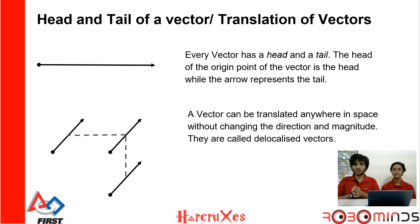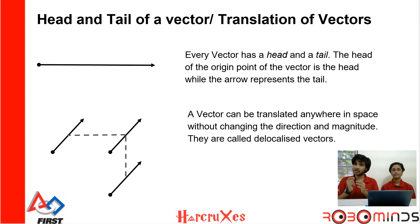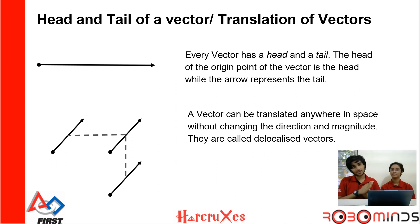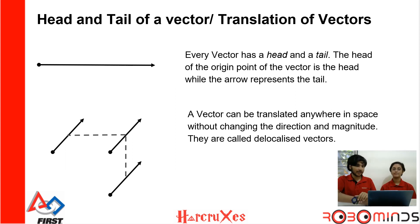Before we move on to the actual calculations, one thing we need to know is that each vector has a head and a tail. The head of the vector is the part with the arrow, which shows the direction. The tail is the starting point, denoted by a dot. Vectors can be moved anywhere through space — it doesn't matter where you were pushed from, only how much and in which direction.